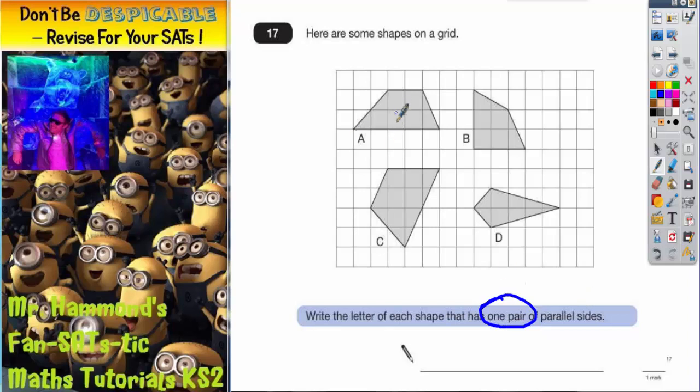Well, shape A, C, B and D are all quadrilaterals.